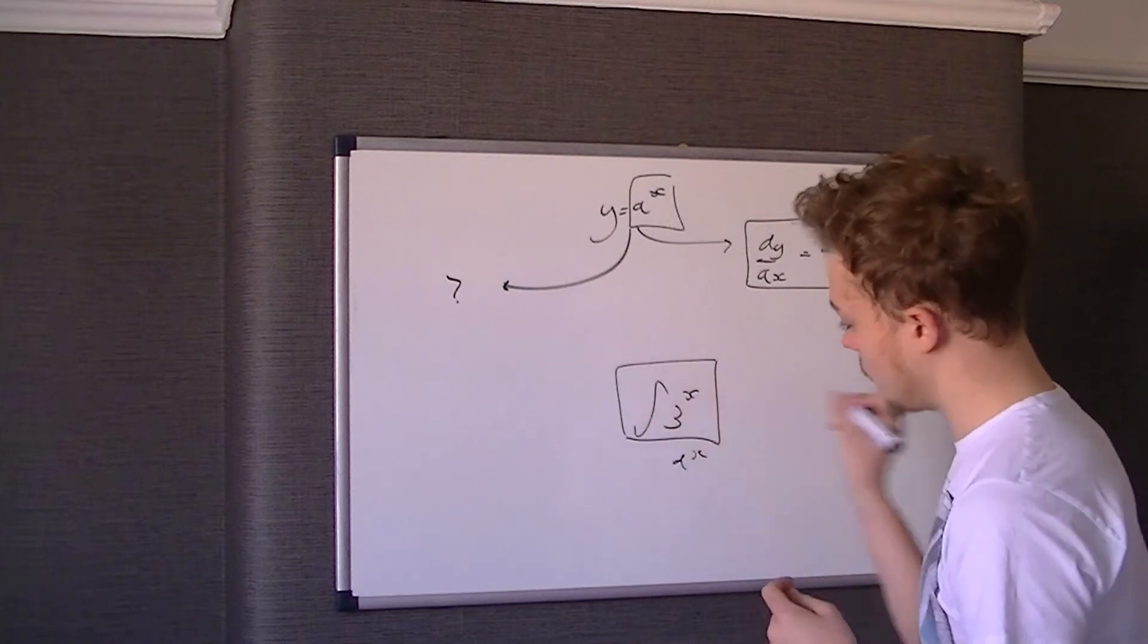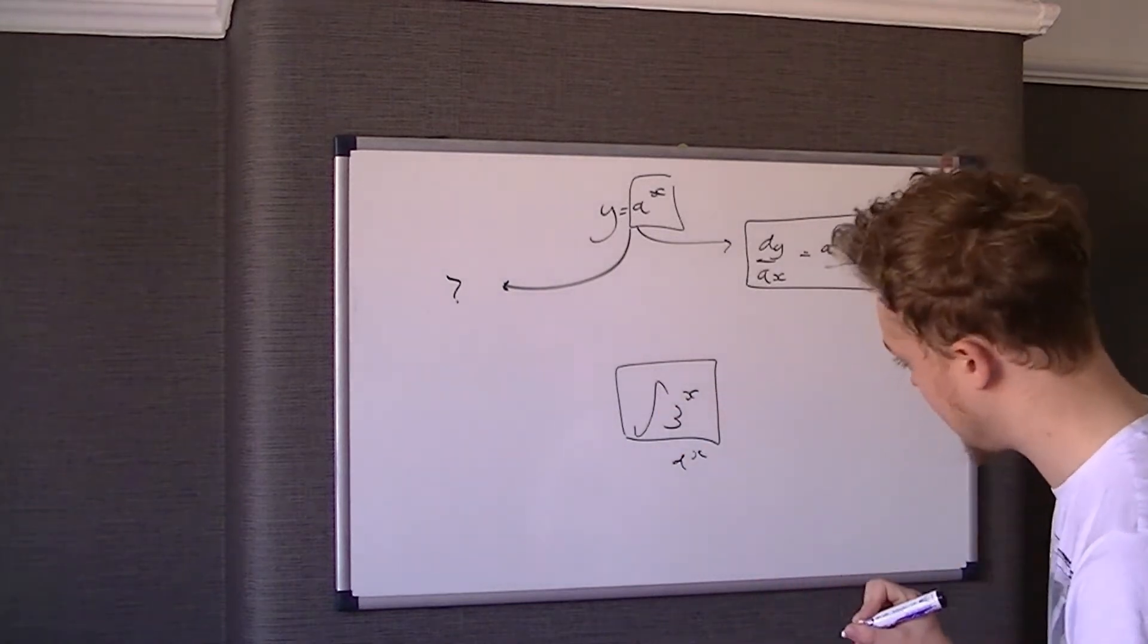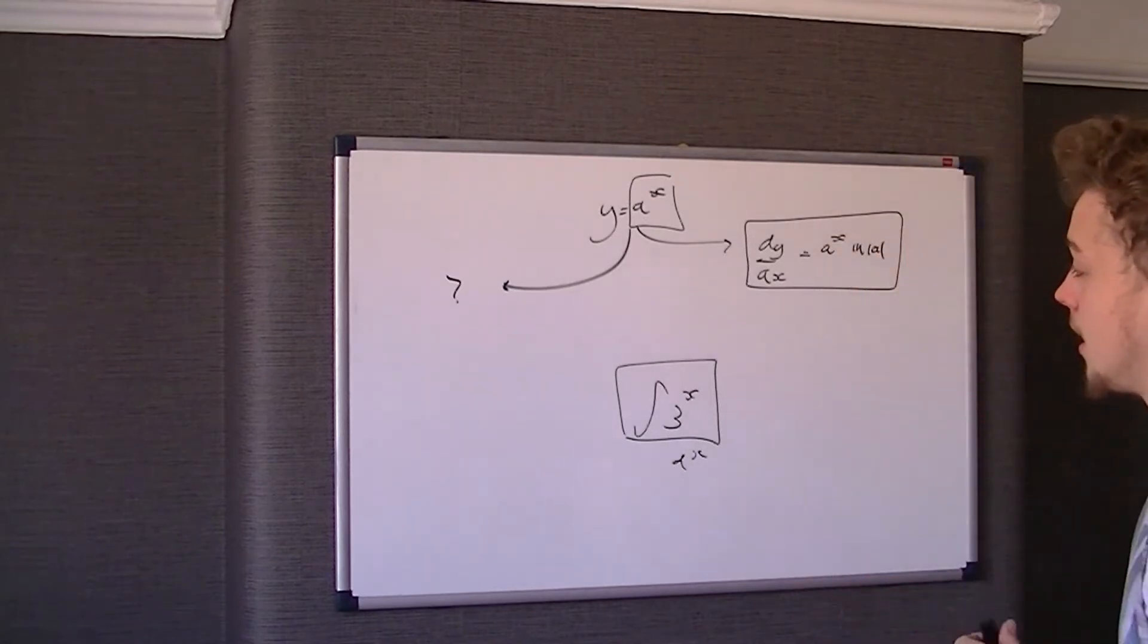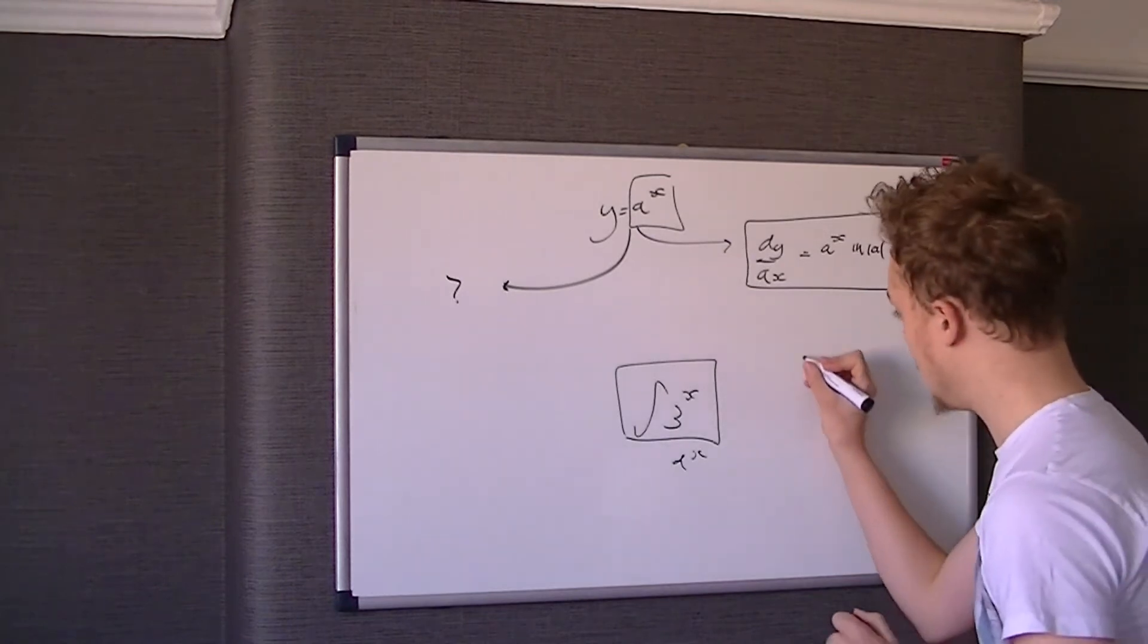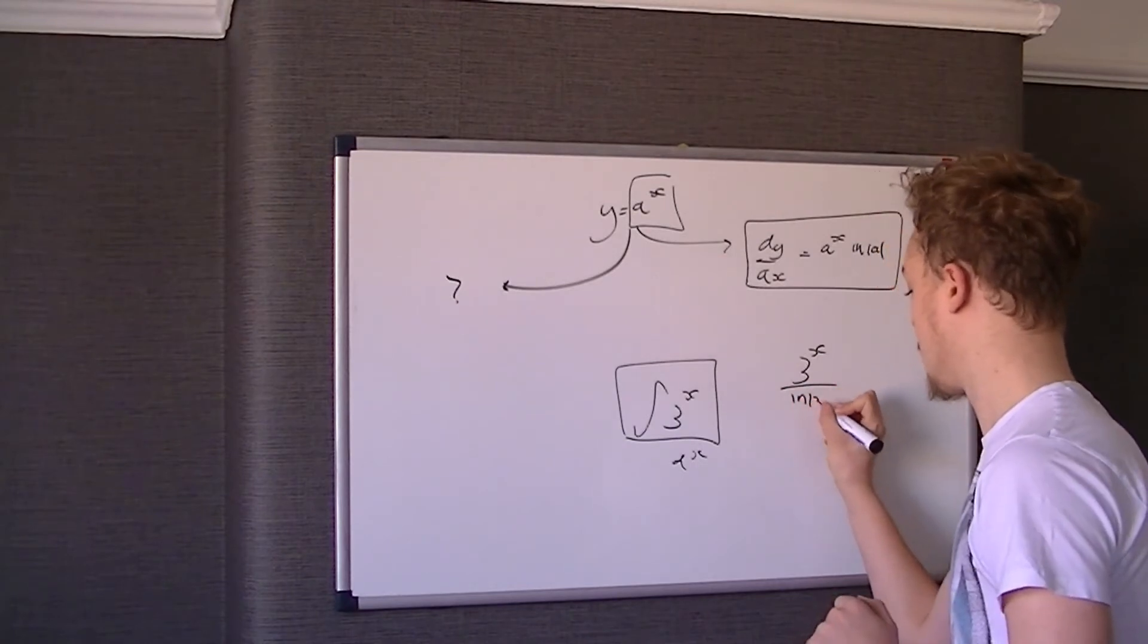So basically when we integrate this, we have to think what did we differentiate to get it? As I said, there's no ln 3s, so they must have cancelled. So the answer to this question must have some kind of ln 3 on the bottom. And what it is, it's just 3 to the x over ln 3.